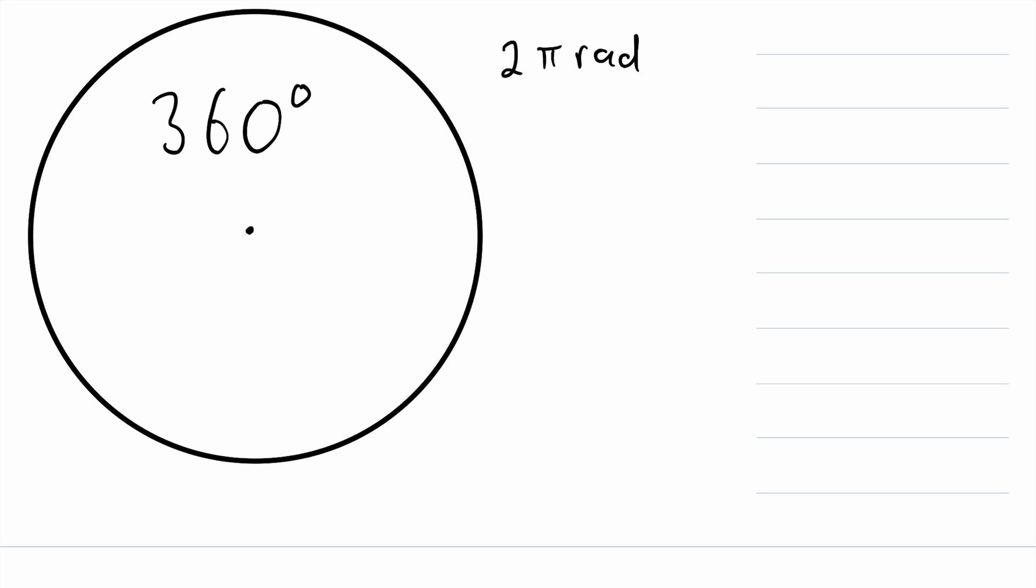So, since there are 360 degrees in a circle and 2π radians in a circle, we know that these two angle measures must be equal. So we can write that 2π radians is equal to 360 degrees. Because both of these angle measures are that of a whole circle, so we know they're equal.